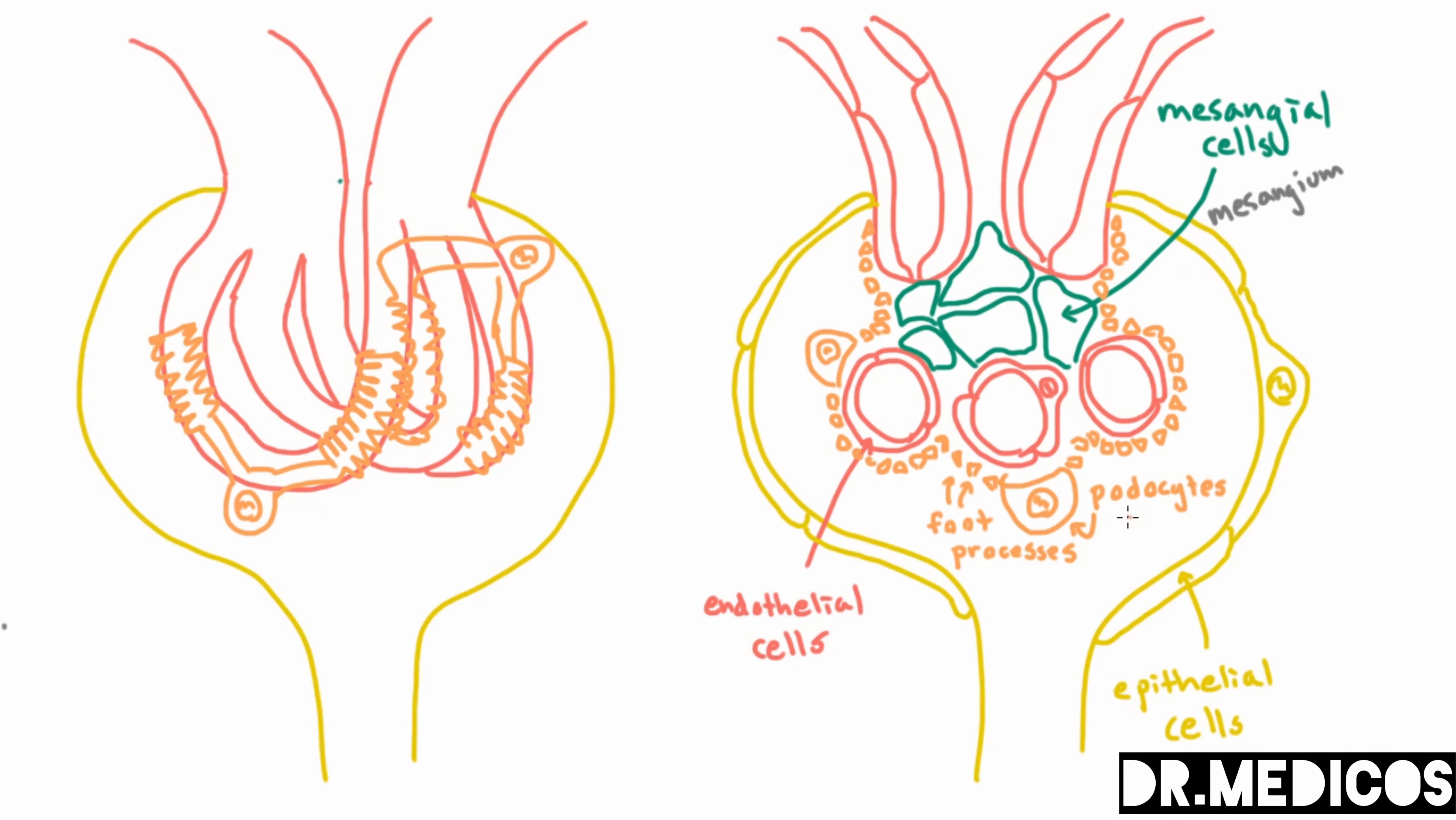Now these podocytes are epithelial cells just like these epithelial cells that were lining Bowman's space. And let's for one second review what exactly is an epithelial cell.